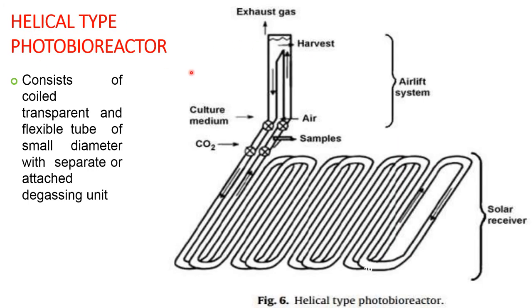Helical type photobioreactor: it consists of a coiled transparent flexible tube of small diameter with a separate or attached degassing unit. This coiled transparent flexible tube with a small diameter is also called a solar receiver, and the exhaust gas or degassing unit is called an airlift system. The microalgal culture can be grown in this helical tube.